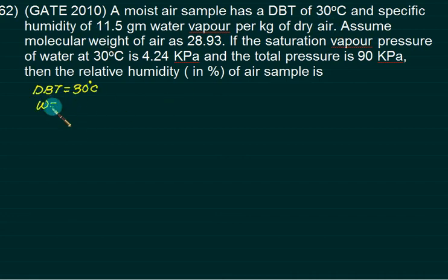Problem 62: Dry bulb has dry bulb temperature equal to 30. Specific humidity is 11.5 grams per kg of dry air, which is 0.0115. Assume the molecular weight of air as 28.93. The saturation vapor pressure of water at 30 degrees dry bulb is PSD.